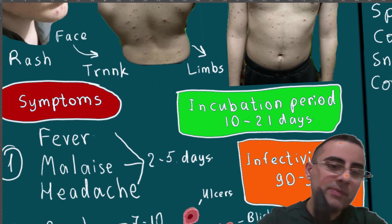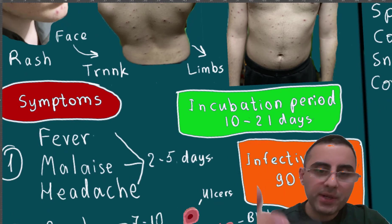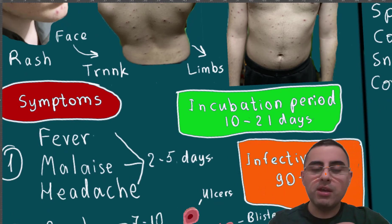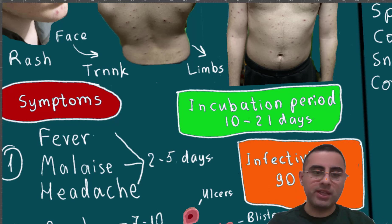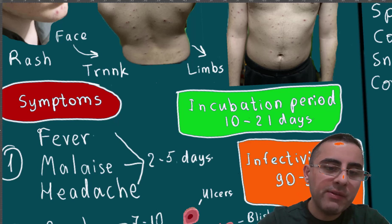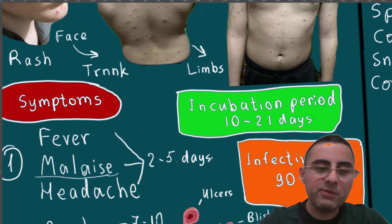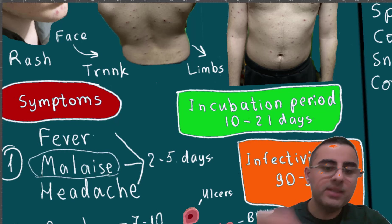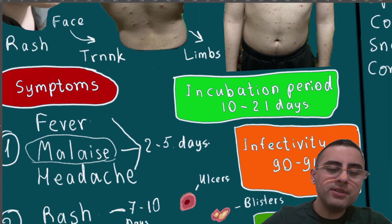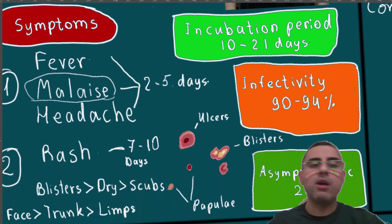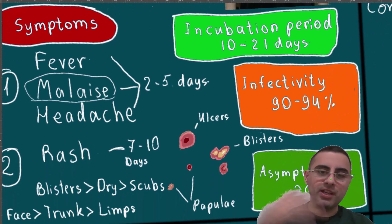Let's look at how symptoms start and how the disease course develops. In the first two to five days, a person may have only fever, malaise, and headache. Malaise is a general sense of not feeling well. After this prodromal phase, the rash occurs.